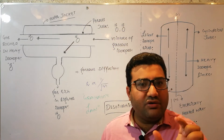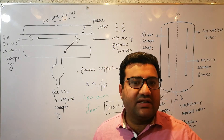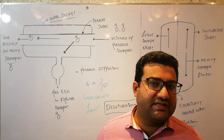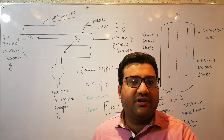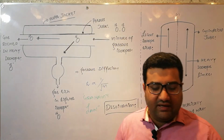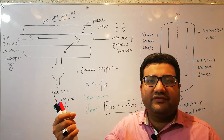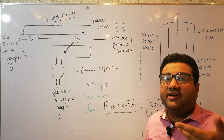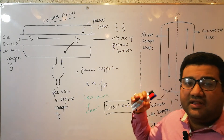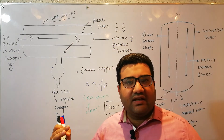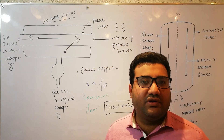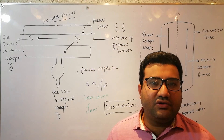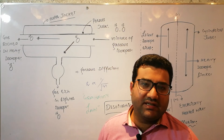Keep in mind that isotopes have the same chemical properties and different physical properties. So separation of isotopes by any chemical means is impossible. Isotopes are always separated on the basis of their physical properties. In mass spectrometry we separate them on the basis of their mass. In gaseous diffusion we separate them on the basis of their rate of diffusion. In thermal diffusion we separate them on the basis of density difference — all examples of physical properties.